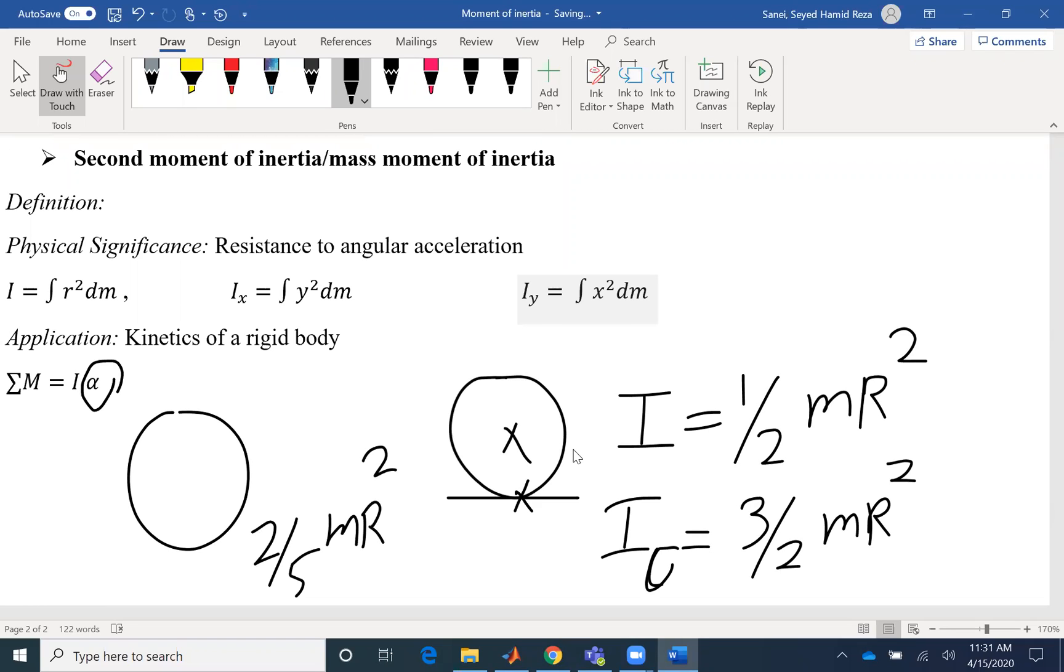And for different objects, you can find these geometrical properties. One thing that you need to pay attention is that which one we are talking about, especially the second moment of area and moment of inertia. We show it by I, so they have the same symbol.